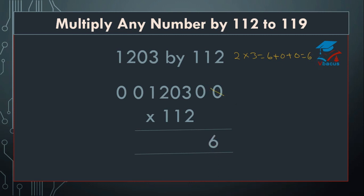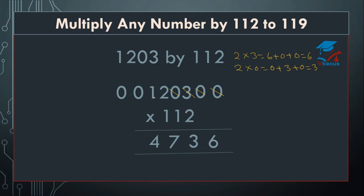Cut the 0. Now, 2 zeros are 0 plus 3 plus 0 equals 3. Write 3, then cut the 0. Multiply: 2 twos are 4 plus 0 equals 4, plus 3 equals 7. Cut 3. Multiply this 2 by 1: 2 ones are 2 plus 2 equals 4, plus 0 equals 4. Cut the 0. 2 zeros are 0 plus 1 equals 1, plus 2 equals 3. Cut 2. 2 zeros are 0, plus 0 plus 0 plus 1 equals 1.